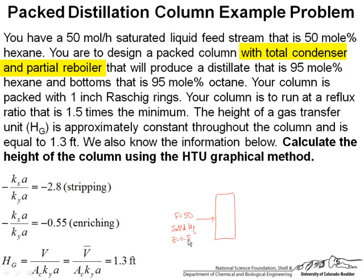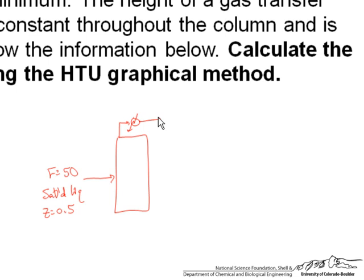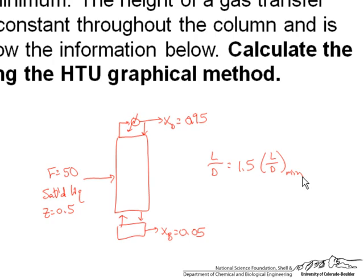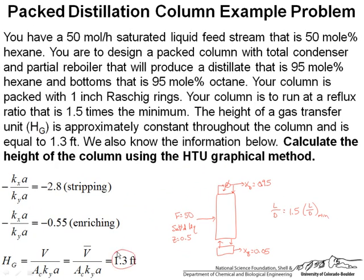We are told that it is a total condenser and a partial reboiler and we know what our distillate composition is. The desired one is 0.95 and the desired bottoms are 0.05. We have a certain packing. It is run at a reflux ratio that is 1.5 times the minimum. So L over D equals 1.5 L over D min and we know that Hg is 1.3, given that down here. And we are also given Kxa over Kya values in the stripping and enriching sections and what we are looking for is the height of the column using the HTU NTU graphical method.